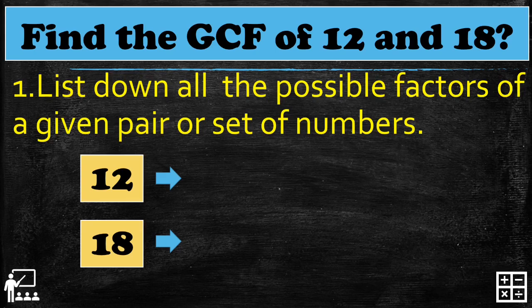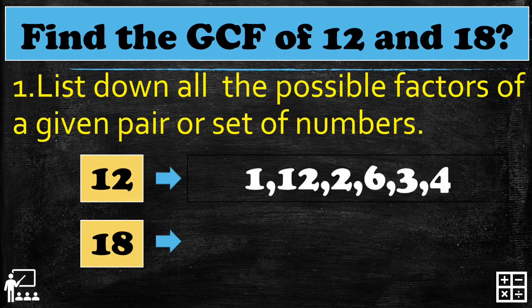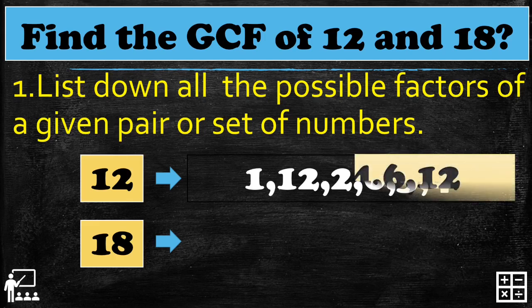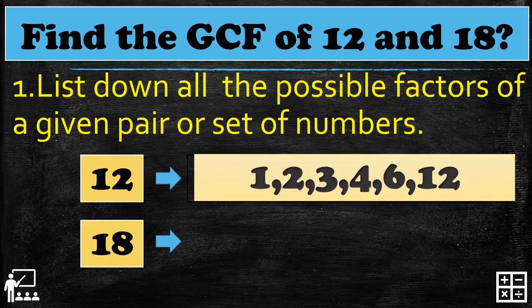First, list down all the possible factors of the given numbers. So I list down all the possible factors of 12: 1 multiplied by 12, 2 multiplied by 6, 3 multiplied by 4. Rearranging in order, the factors of 12 are 1, 2, 3, 4, 6, and 12.